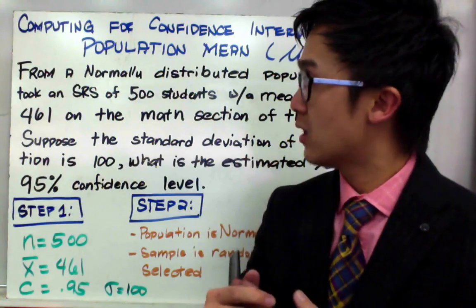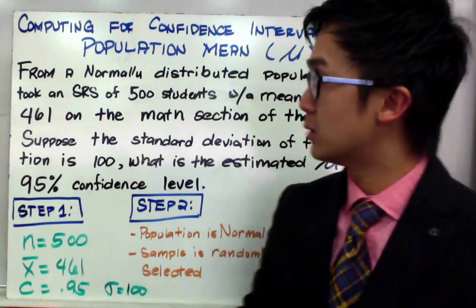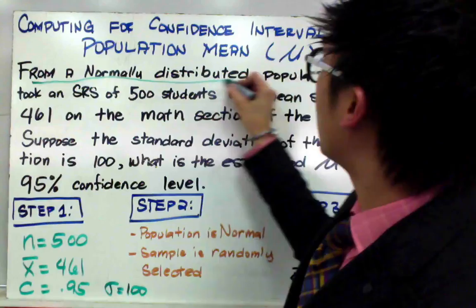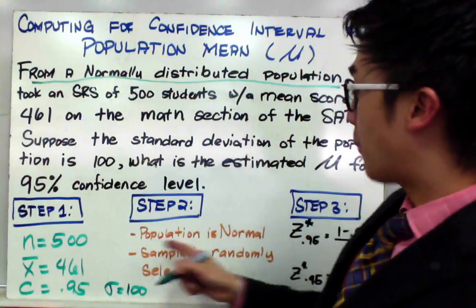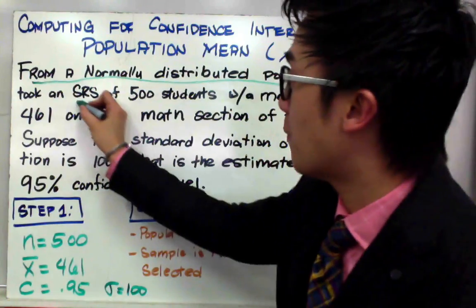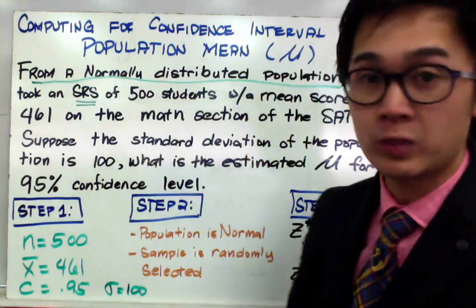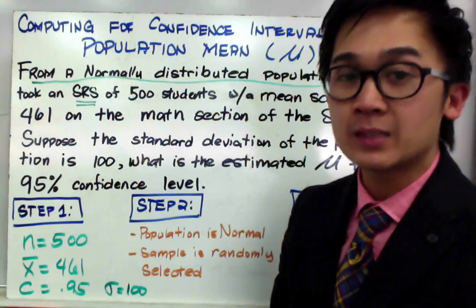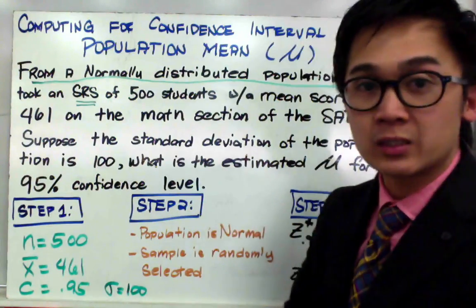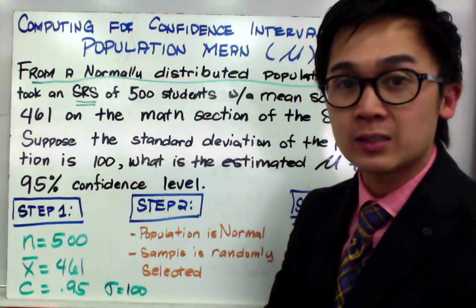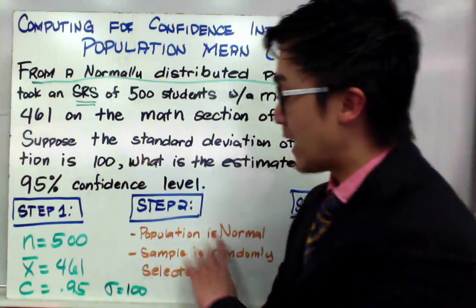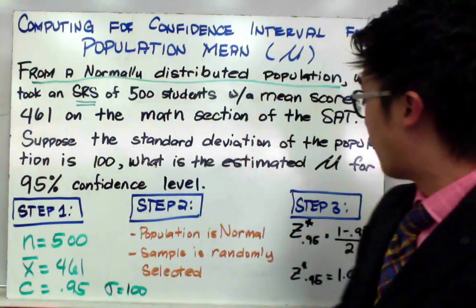Both of these conditions are satisfied from the word problems and it says here that the sample came from a normally distributed population. So the population is normal and two, it is also randomly selected because it's from an SRS of 500 students which basically means simple random sample. Now that we have verified our conditions, we are ready to work with our statistical work and rely on our answer because we have satisfied our conditions.